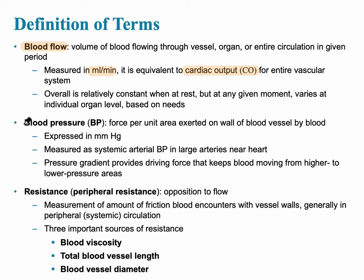Blood pressure is different from blood flow — it is the force exerted by blood on the vessel wall. Imagine water rushing through a tunnel and pressing against its walls. It is measured as systemic arterial blood pressure in large arteries near the heart, such as the aorta. Blood flows from areas of high pressure to areas of low pressure, following a pressure gradient.